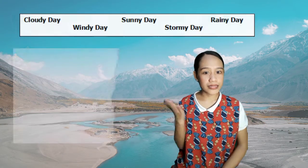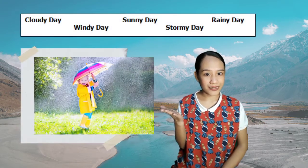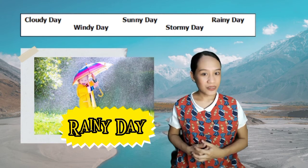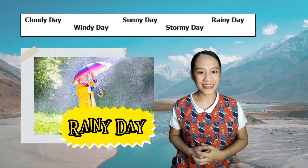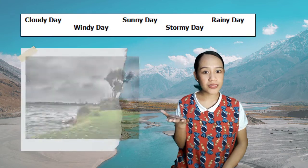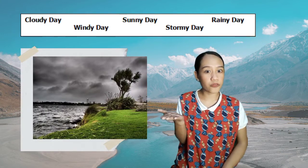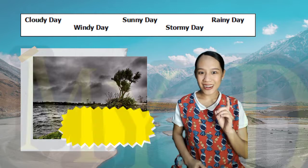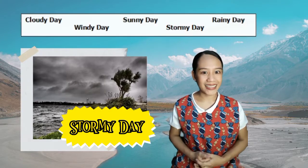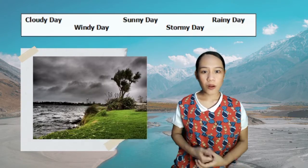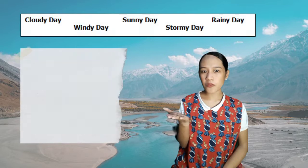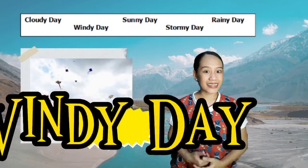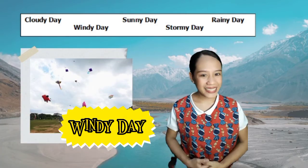Next, what about this picture? What type of weather is it? Correct! It's a stormy day. And for the last picture, what type of weather is this? Correct! It's a windy day.